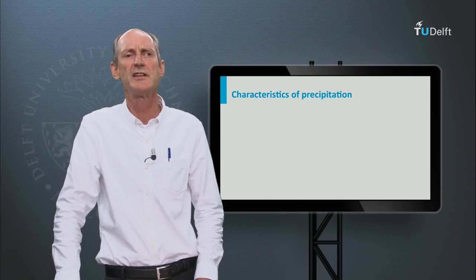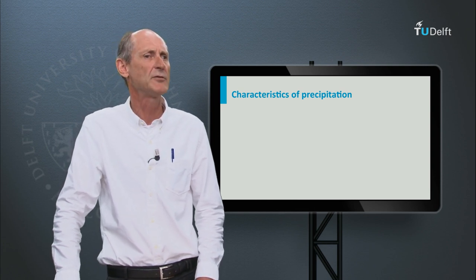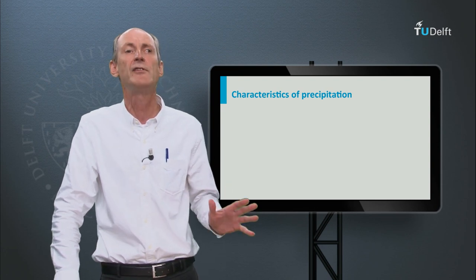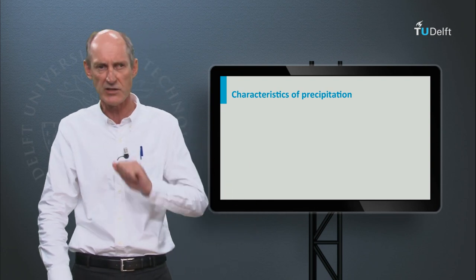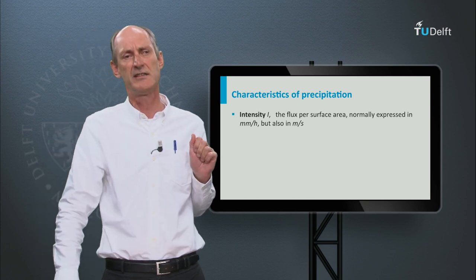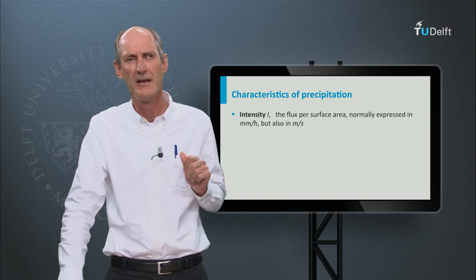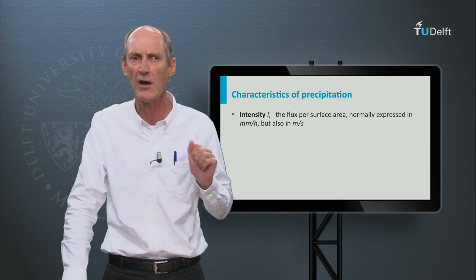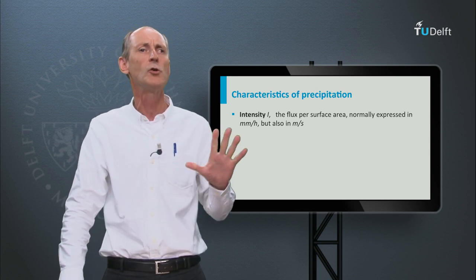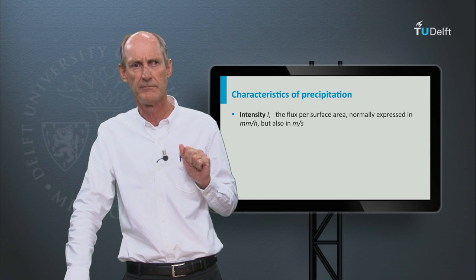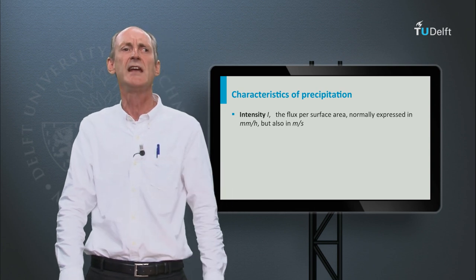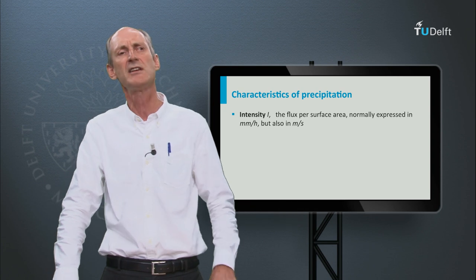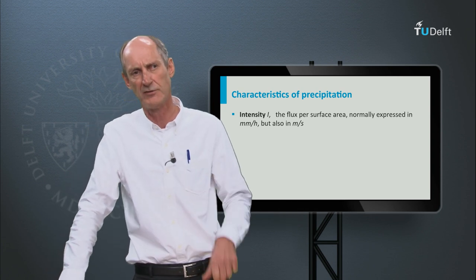Precipitation has a number of characteristics that we have to distinguish very well. Watch out, because not everybody does this. Firstly, there is the intensity. Precipitation being a flux, the intensity is the measure of the flux. But it depends on the duration of the rainfall. In general we can say that if the duration is longer, the intensity is lower.